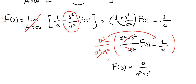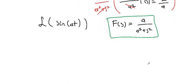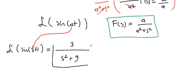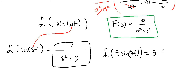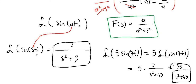So the Laplace transform of sine of at is a over a squared plus s squared. For example, the Laplace transform of sine of 3t has a equals 3, so it's 3 over s squared plus 9. For 5 sine of 7t, since Laplace is a linear operator, it's 5 times the Laplace of sine of 7t, giving 5 times 7 over s squared plus 49, which simplifies to 35 over s squared plus 49.